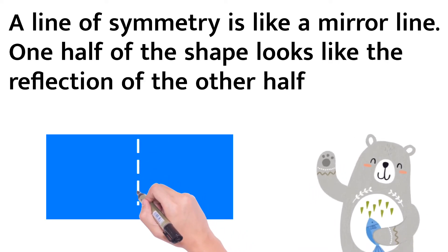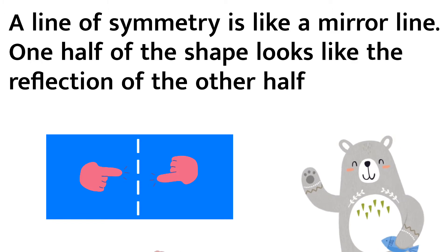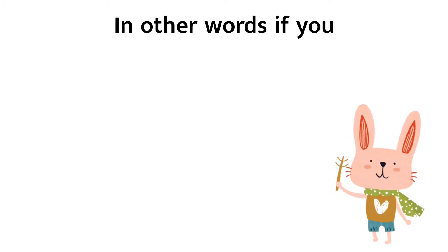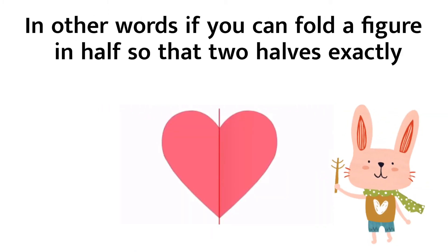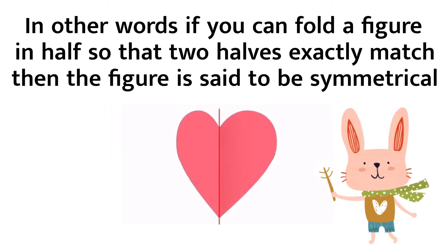One half of the shape looks like the reflection of the other half. In other words, if you can fold a figure in half so that two halves exactly match, then the figure is said to be symmetrical.